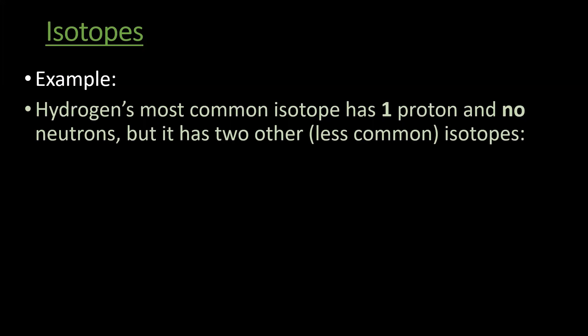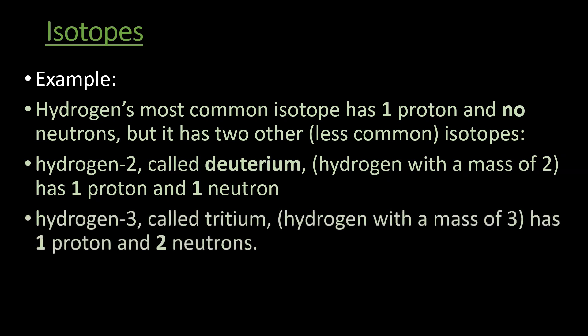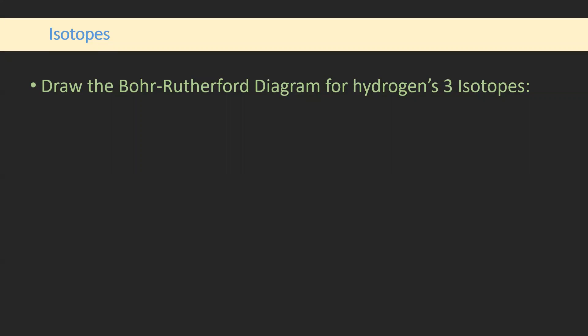Hydrogen's most common isotope is one proton, no neutrons, but there are other isotopes. Two of them would be hydrogen-2 and hydrogen-3. Hydrogen-2 is deuterium and that has a mass of two, one proton and one neutron. Hydrogen-3 is tritium with a mass of three, one proton and two neutrons. Let's see what these would look like in a Bohr diagram.